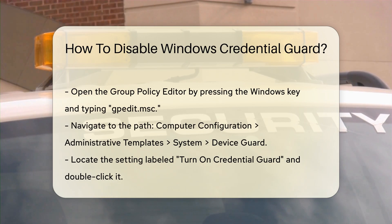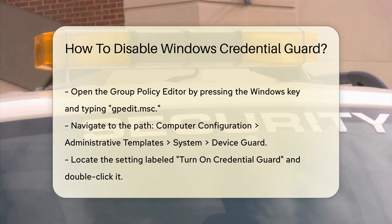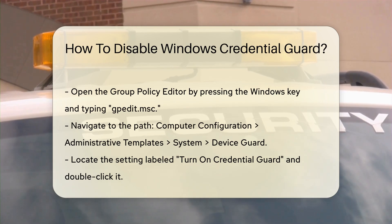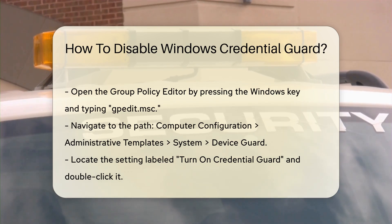In this section, locate the setting labeled Turn on Credential Guard. Double-click to open it. You will find options to enable or disable this feature. Select Disabled to turn off Credential Guard.